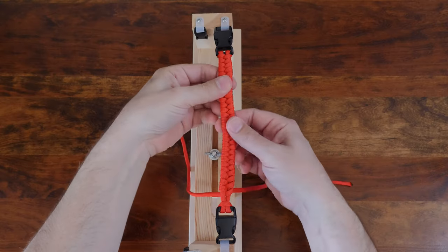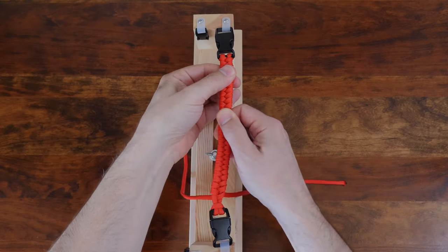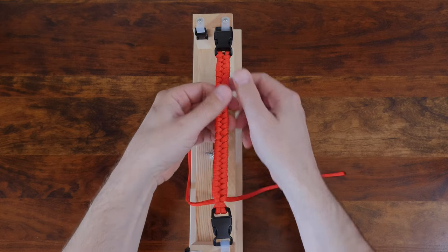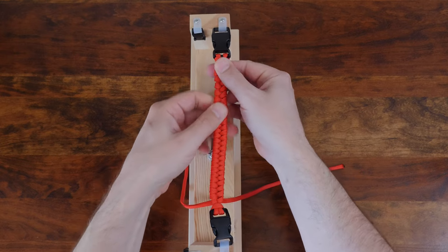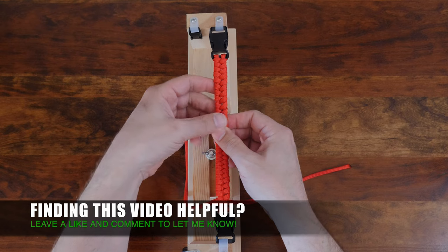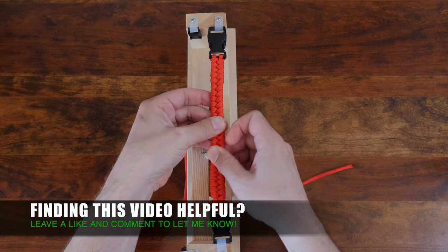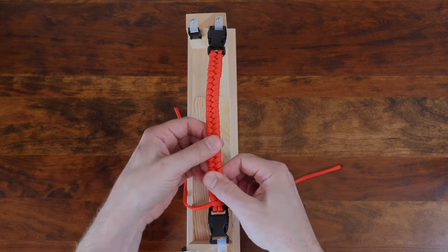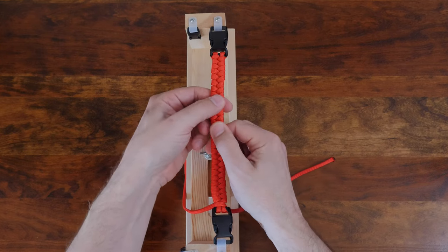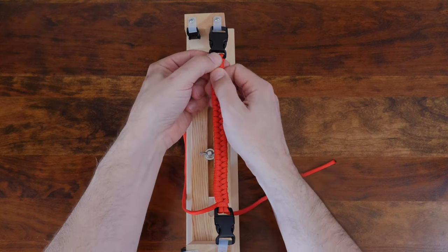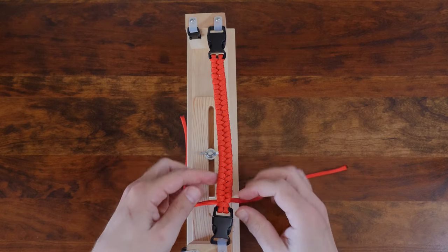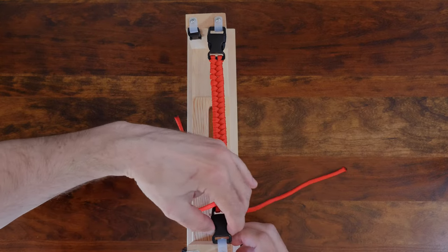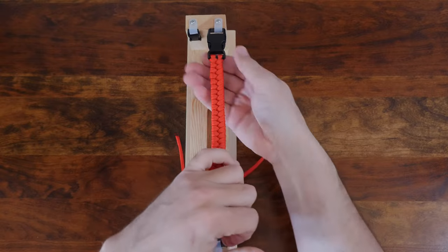With our final weaves done, we can now readjust the weaves by pulling them back along the core strands and adjusting the tightness. It's time for me to remove the paracord bracelet from the jig and I'll show you how to finish it off.